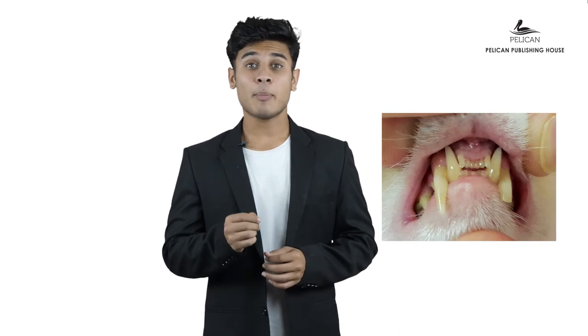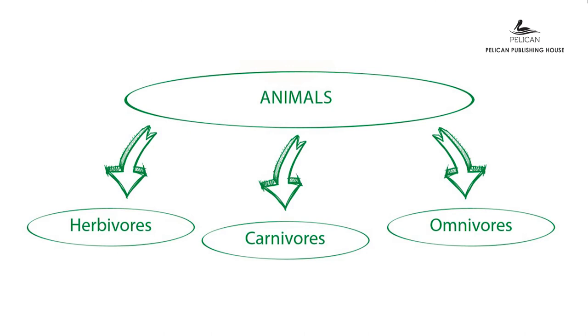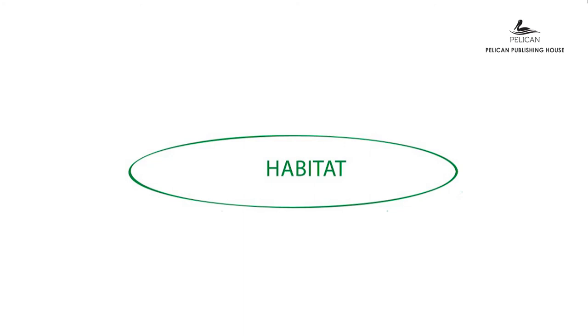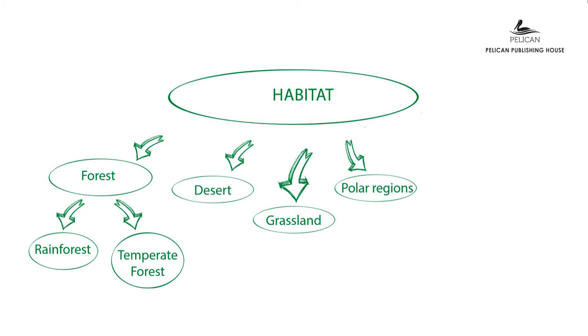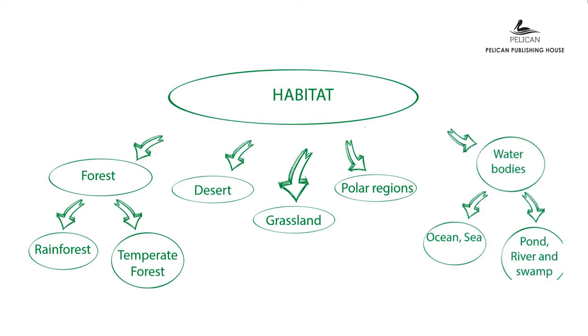Here are some word meanings: canine teeth are the sharp, long, and pointed teeth of carnivorous animals; claws are the sharp and curved nails of animals; prey is an animal that is hunted and killed for food by another animal. To summarize: animals can be divided into herbivores, carnivores, and omnivores based on food habits. An area where an animal lives for food, water, and shelter is its habitat — habitats include rainforests, temperate forests, deserts, grasslands, polar regions, oceans, and freshwater bodies.